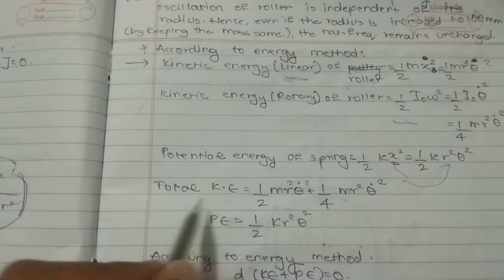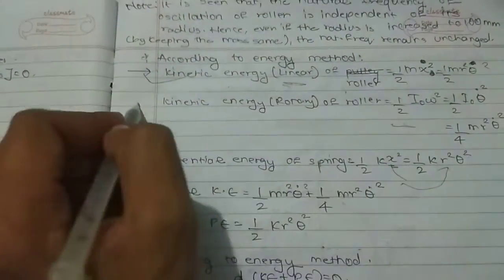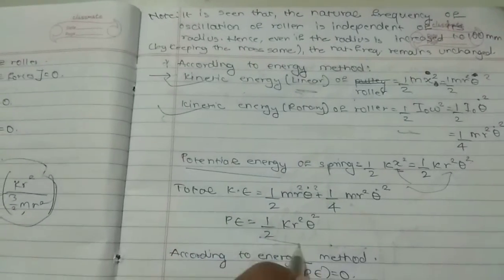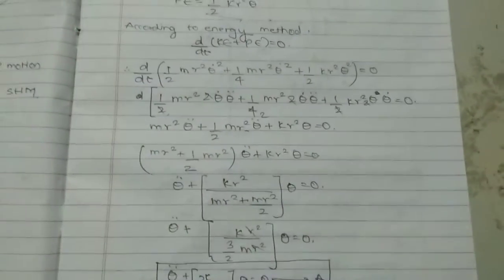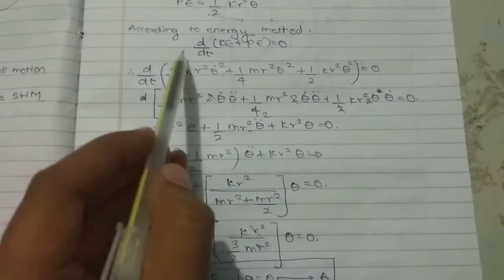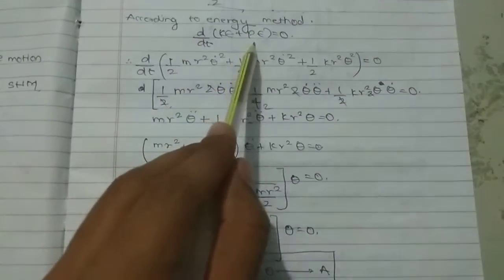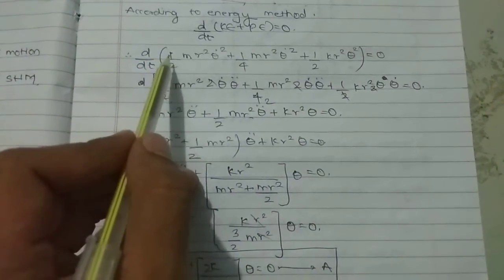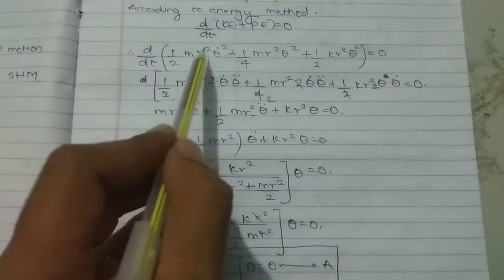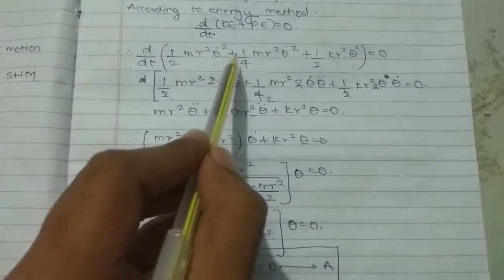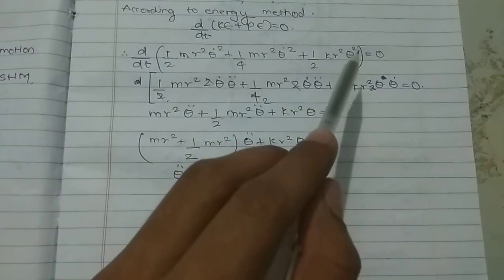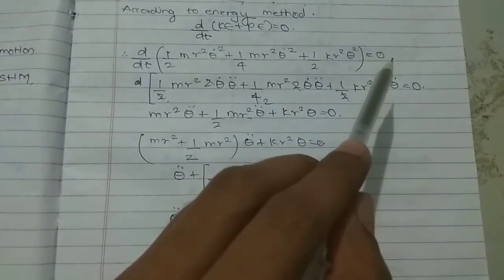The total kinetic energy is the sum of both kinetic energies, and we have one potential energy term. According to the energy method, d/dt of (kinetic energy plus potential energy) equals zero. So d/dt of [(1/2)*m*r²*theta-dot² + (1/4)*m*r²*theta-dot² + (1/2)*k*r²*theta²] equals zero.